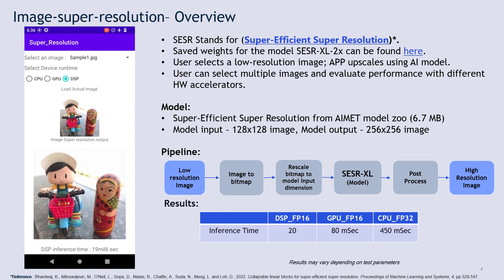SESR stands for Super Efficient Super Resolution. The model input dimension is 128x128px and the output dimension is 256x256px. The pipeline for upscaling the image is shown on the screen. First, the low resolution image is converted to a bitmap.